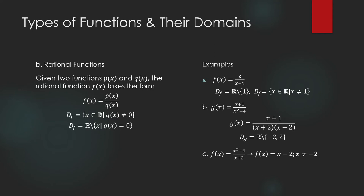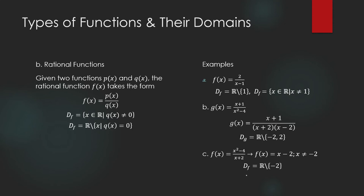How about f(x) = (x² − 4) / (x + 2)? The numerator and denominator have a common factor: x² − 4 = (x + 2)(x − 2), so the common factor is (x + 2). When you cancel common factors, the result is x − 2, but you must not forget to note that x cannot equal −2, because when x = −2 you have division by zero and the function is undefined. The domain is the set of real numbers minus {−2}.